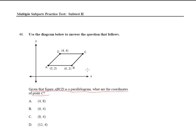This is unbelievably easy. If you just take a look at point A and point D, notice what happens. Point A is at (2, 2) and D is at (4, 4). That means it moved over plus 2 and plus 2. So when we look at B, we simply add 2 to 6 and 2 to 2, because it was a change of 2 and 2. That means C has got to be at (8, 4), and you can see that is answer C.